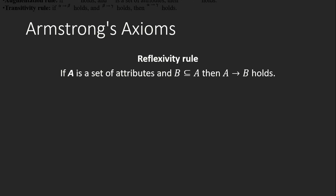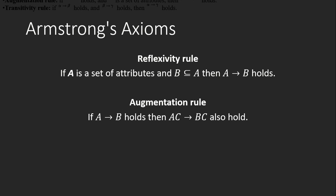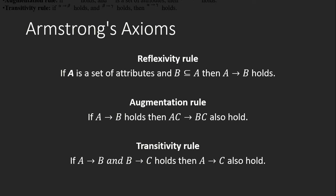Armstrong's axioms: First is the reflexivity rule — if B is a subset of A, then A → B must hold. Second is the augmentation rule — if A → B holds, then if we augment both sides by adding another set of attributes C, the new rule AC → BC must also hold.